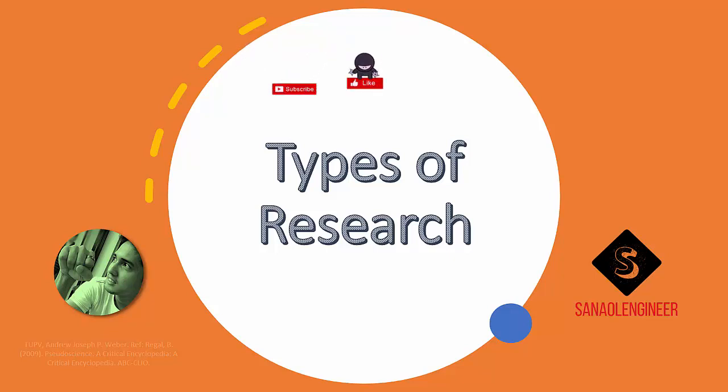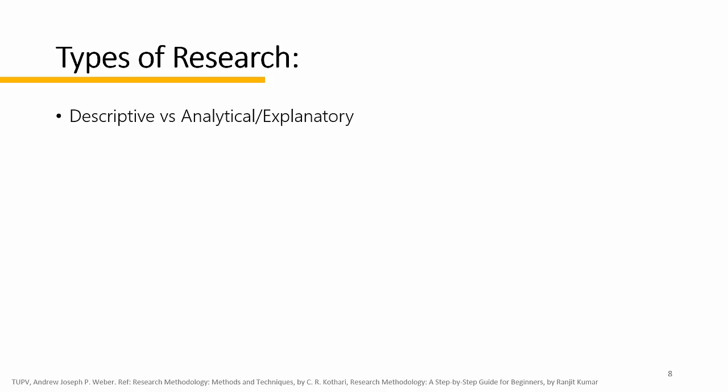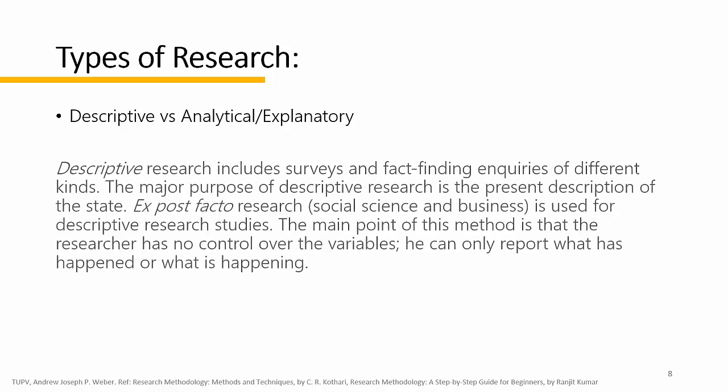Let's discuss the different types of research: descriptive versus analytical or explanatory. Descriptive research includes surveys and fact-finding inquiries of different kinds. The major purpose of descriptive research is to present a description of the state of an exposed factor. Research in social science and business uses descriptive research studies, just with different terms. The main point of this method is that the researcher has no control over the variables.